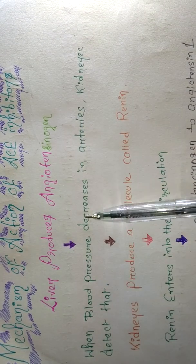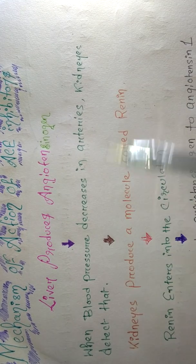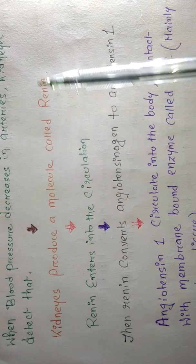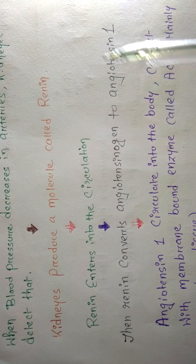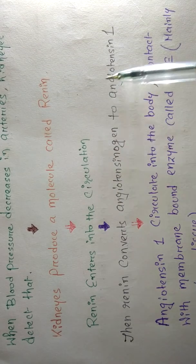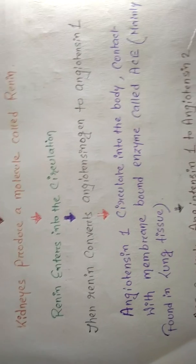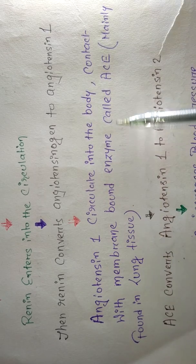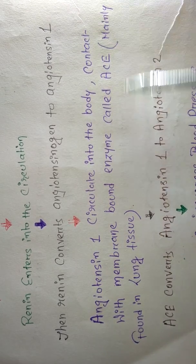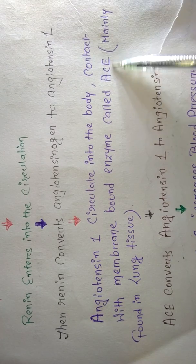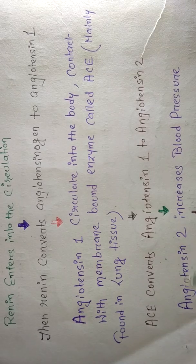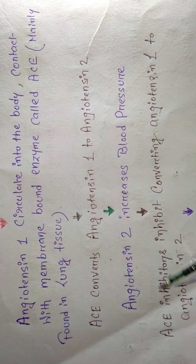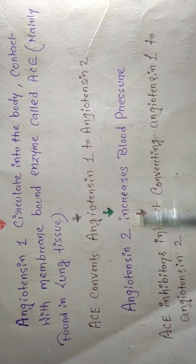Suppose my blood pressure decreases today — my kidney will know that and will produce renin. Renin goes to the artery and converts angiotensinogen into angiotensin 1. Angiotensin 1 then circulates in the body and contacts a membrane-bound enzyme called ACE, which is mainly found in the lung tissue. ACE converts angiotensin 1 to angiotensin 2.